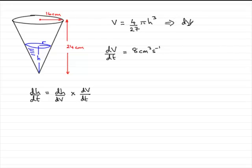It follows that dV/dh equals, and if we differentiate this in a normal way, we're going to have (4/27)π multiplied by the differential of h³, which is 3h².